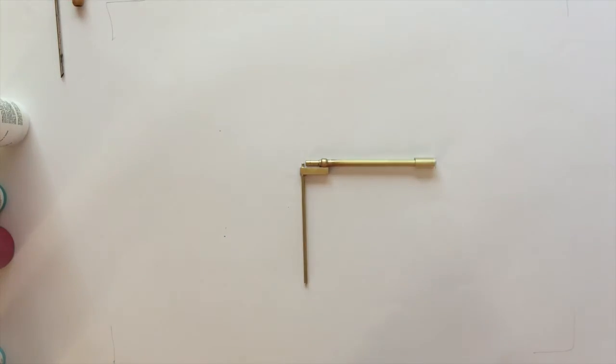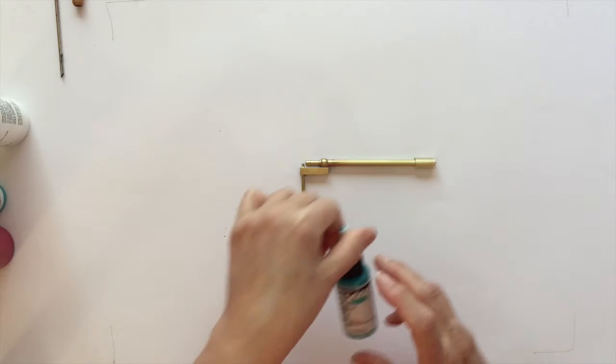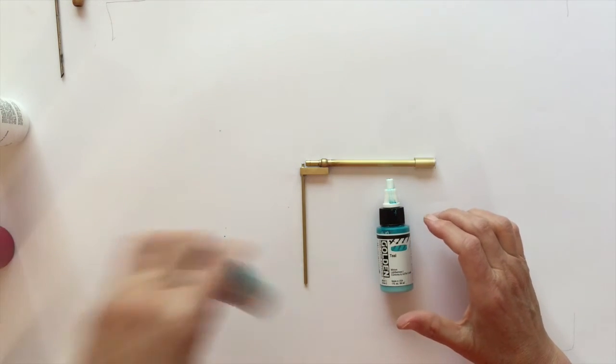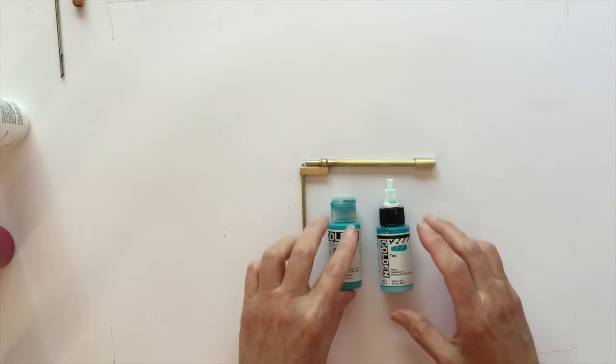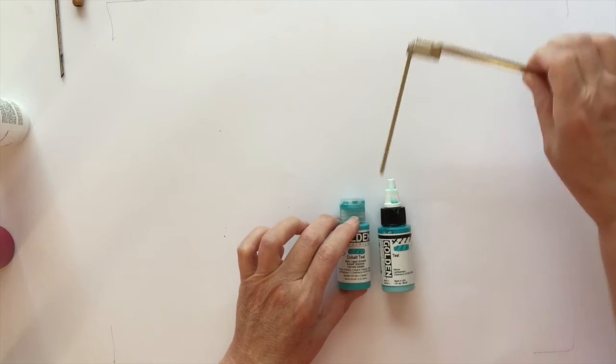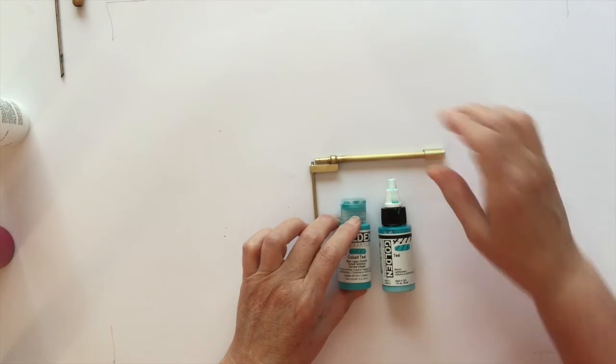So let me just tell you a little bit more about that mouth atomizer. These are the things that you can spray with it. You can spray high flow acrylic with it. I'm not talking fluid acrylic—I'm talking high flow. There's a difference. Fluid acrylic is too thick to put your tube into and spray. It will not spray.